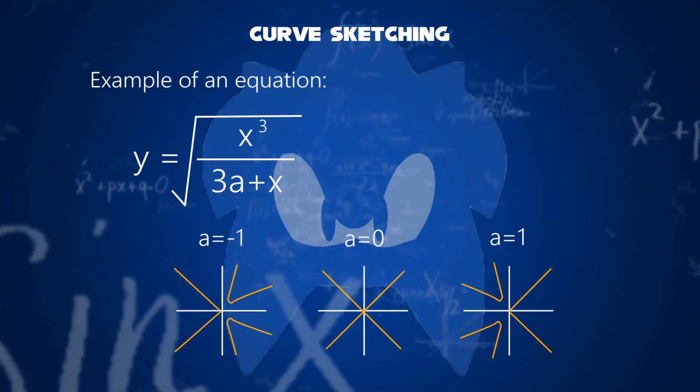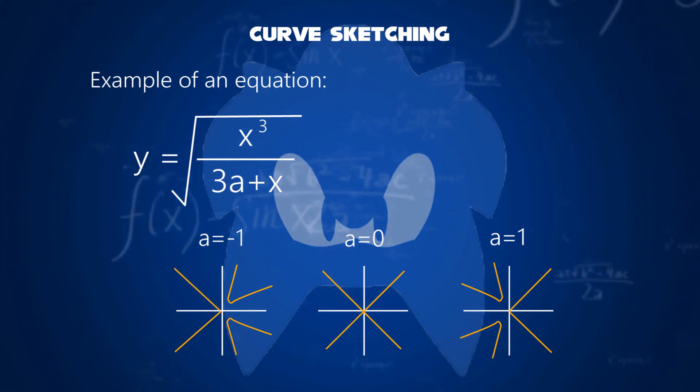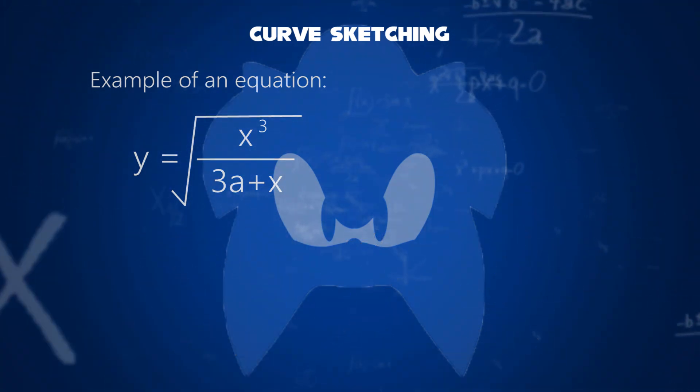Either you can take a equals zero, or one, or minus one. So that's how we learn how to find the curve sketching.